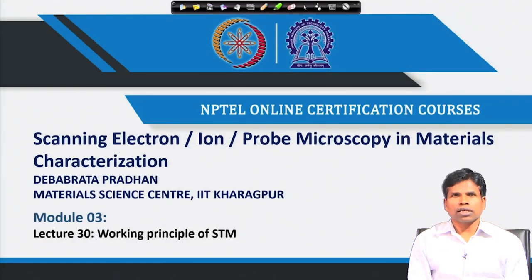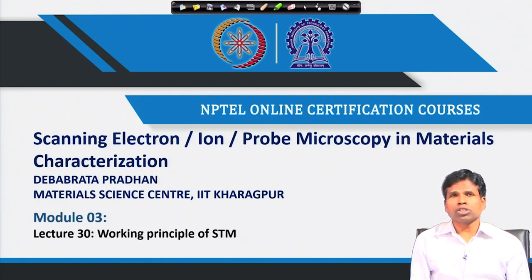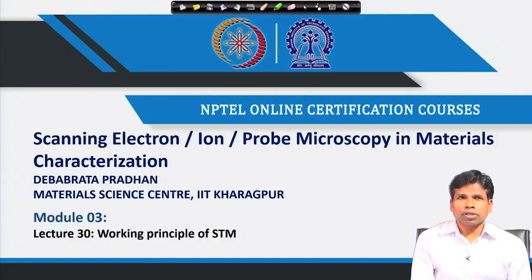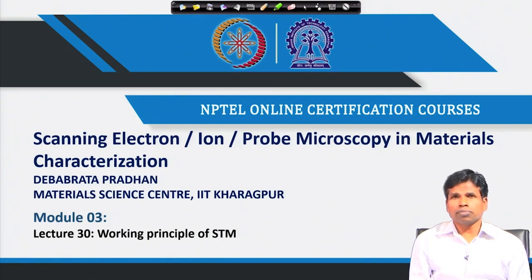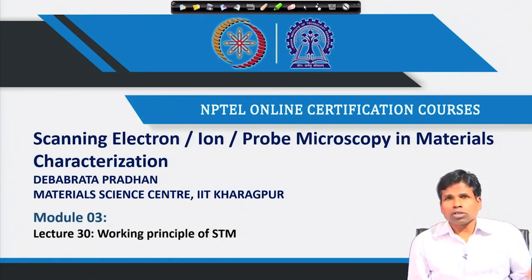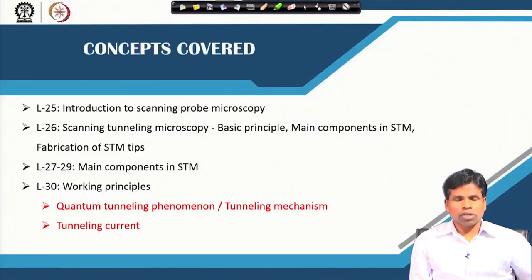Welcome back to scanning electron ion probe microscopy in material characterization. We have been discussing different scanning microscopic techniques. In the last couple of lectures, we started discussing scanning probe microscopy, in which a physical probe is used to scan the surface to get surface information or surface topology. We began with the scanning tunneling microscope, where we measure the tunneling current between the tip and sample. Today, we will discuss its working principle — in particular, how the tunneling phenomenon works and how tunneling current is measured.